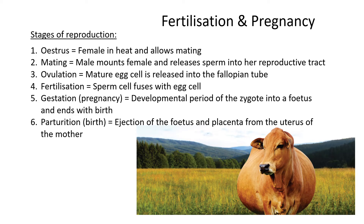The first stage is oestrus — this is when the female goes into heat and allows the bull to mate with her. Secondly is the actual act of mating, where the male mounts the female and releases his sperm into her reproductive tract. This is a very vital step; without it, fertilization can't happen.